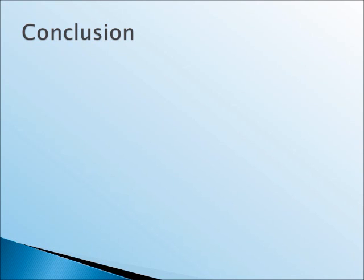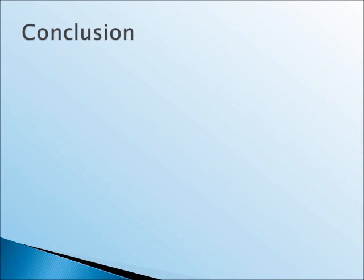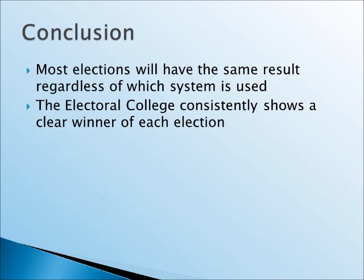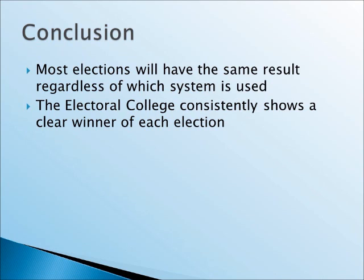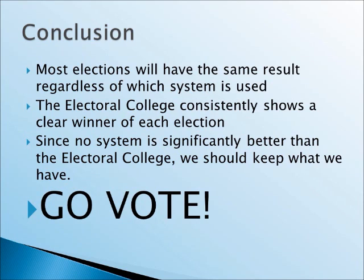We could go on looking at many more years of elections, but I think we've seen enough to draw some conclusions. First, most elections have the exact same result no matter what system we use. Second, the electoral college consistently shows a clear winner of each election, unlike the proportional plan. And finally, since no system can be shown to be significantly better than the electoral college, we should probably keep what we have — it seems to work pretty well most of the time. But most importantly, your vote does still count, no matter what system we're using. So get out there and go vote!